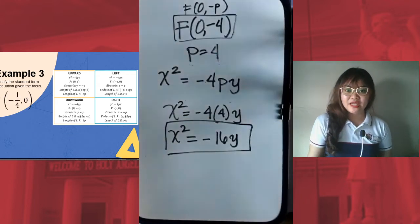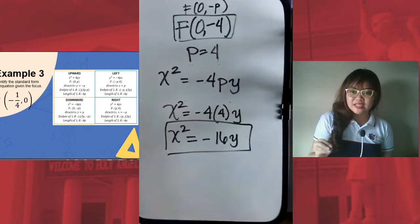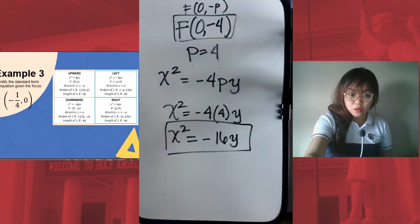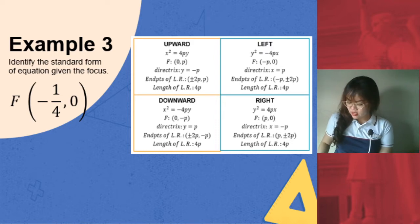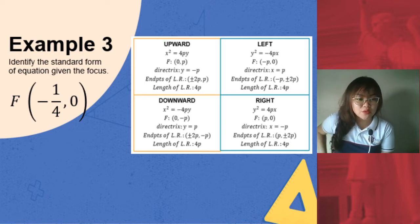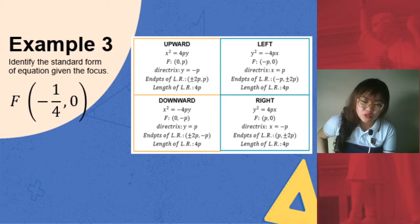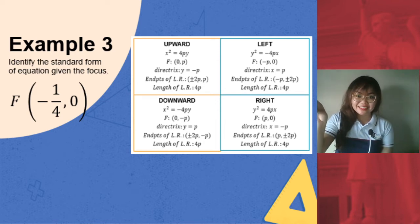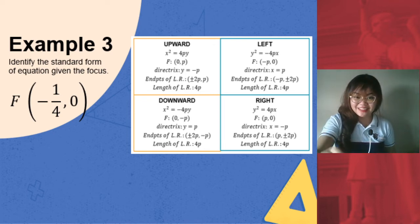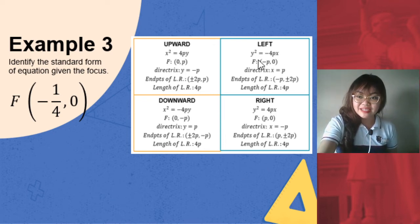Example number 3. This time we have the focus at (-1/4, 0). It's a fraction, -1/4. Let's identify whether it's a parabola opening upward, downward, left, or right. Our x-coordinate is a negative value and the y-coordinate is 0. Which among the cases has a negative x-coordinate and 0 as its y-coordinate? It is a parabola opening to the left. We have a negative p-value here and 0 for our y-coordinate.